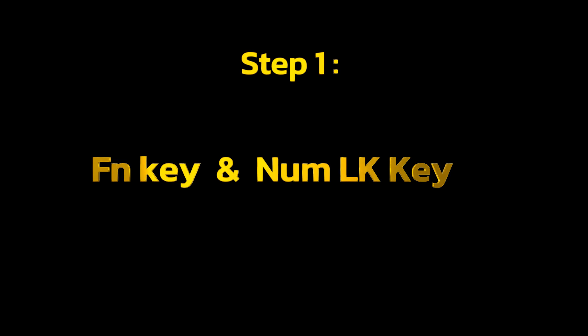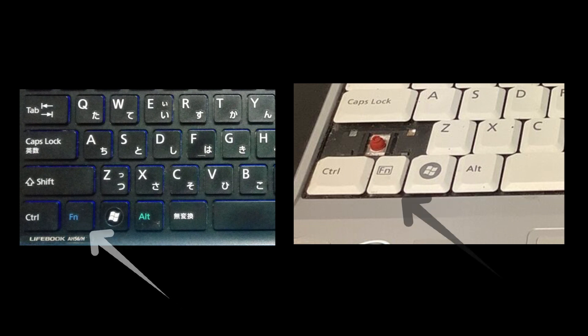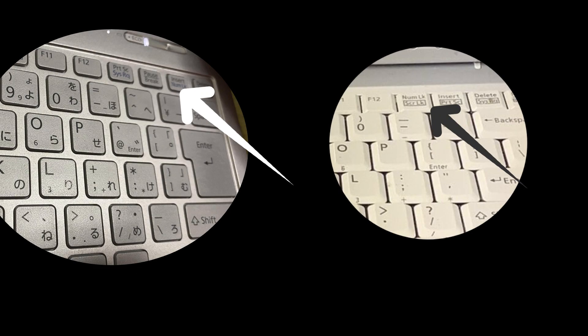The first step is to find the FN and NumLock key on your keyboard. If you are struggling to find the keys, the FN key is located at the bottom left corner of the keyboard, and the NumLock key is located at the top right corner of the keyboard.